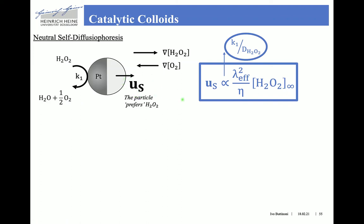The slip velocity is proportional to an effective absorption length squared, inversely proportional to the viscosity of the medium, and also proportional to the concentration of hydrogen peroxide in bulk, where the proportionality constant increases with the reaction rate — the rate at which H₂O₂ is decomposed across the platinum cap — and decreases with the diffusivity of hydrogen peroxide. If we increase this ratio, the gradient of H₂O₂ across the particle becomes steeper, whereas if hydrogen peroxide diffuses faster, these gradients are smeared out.